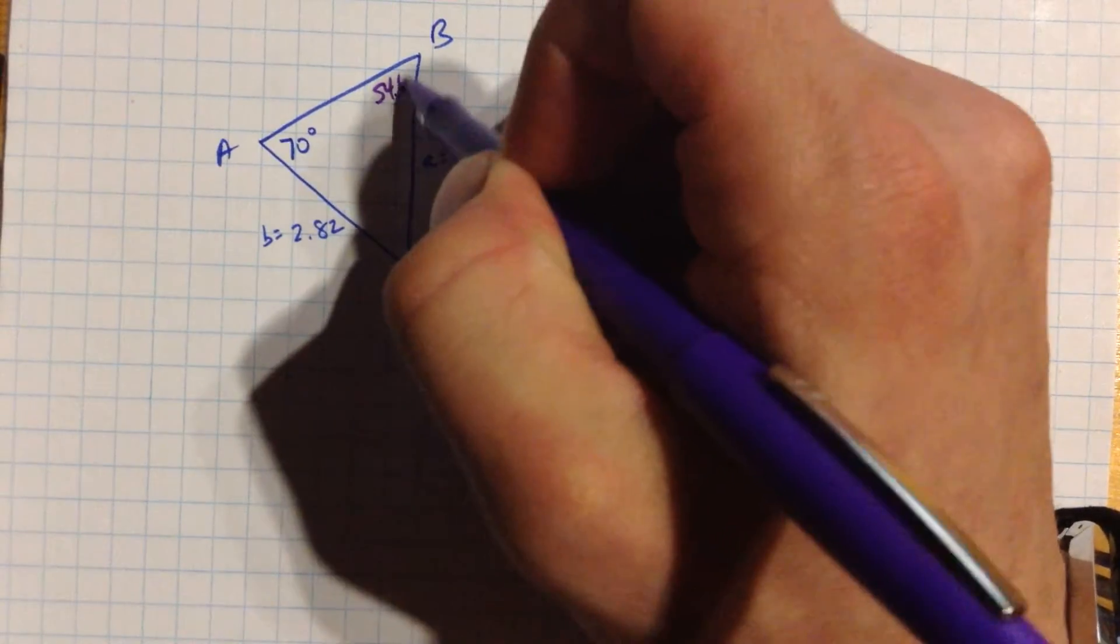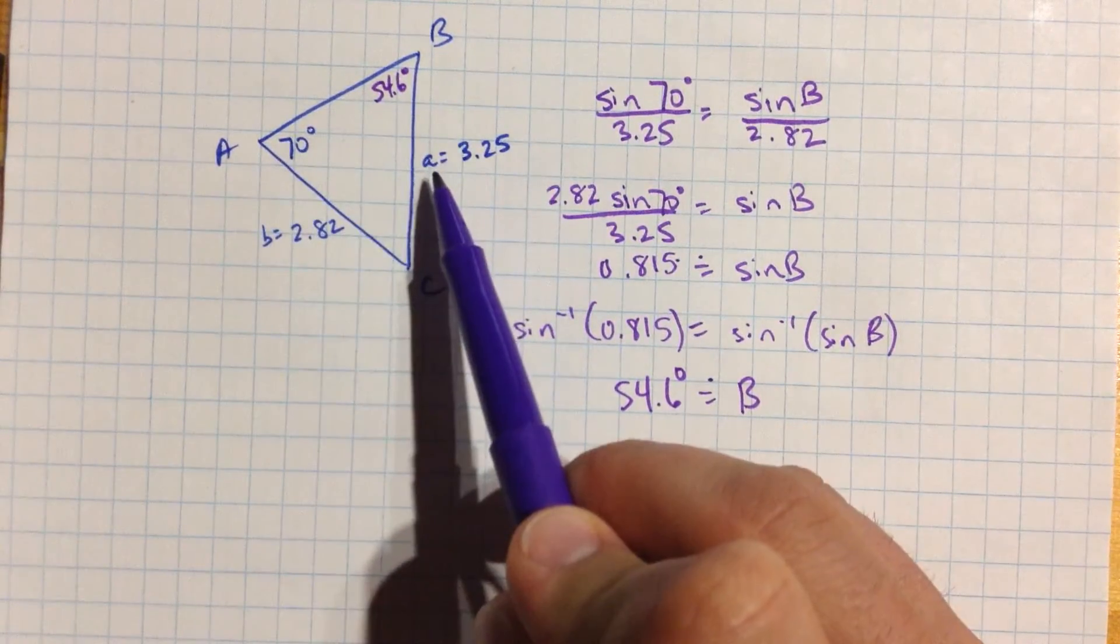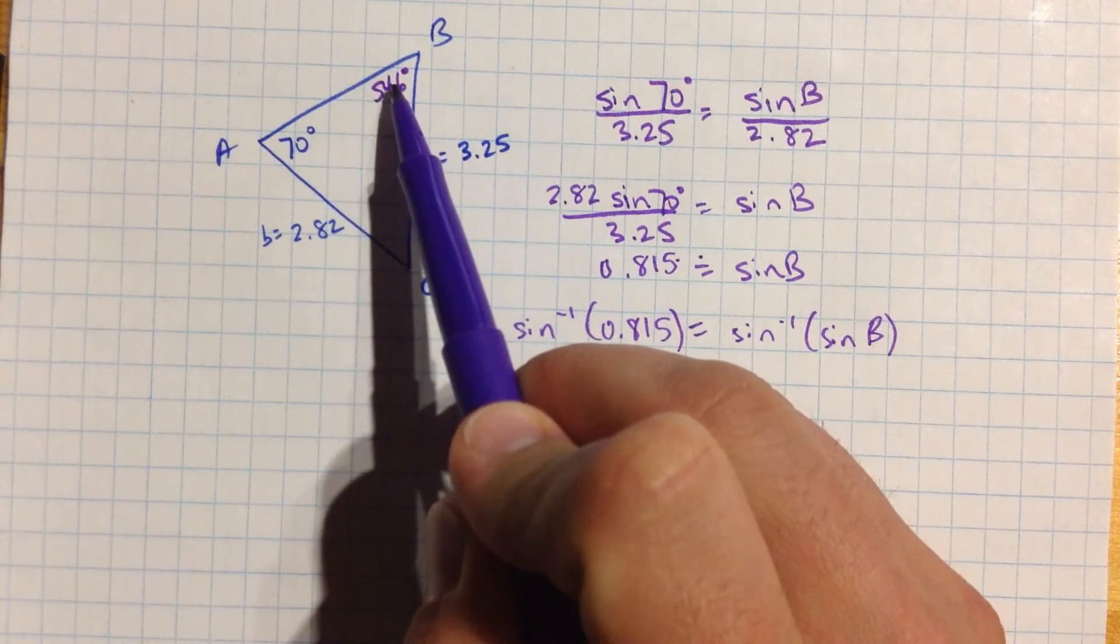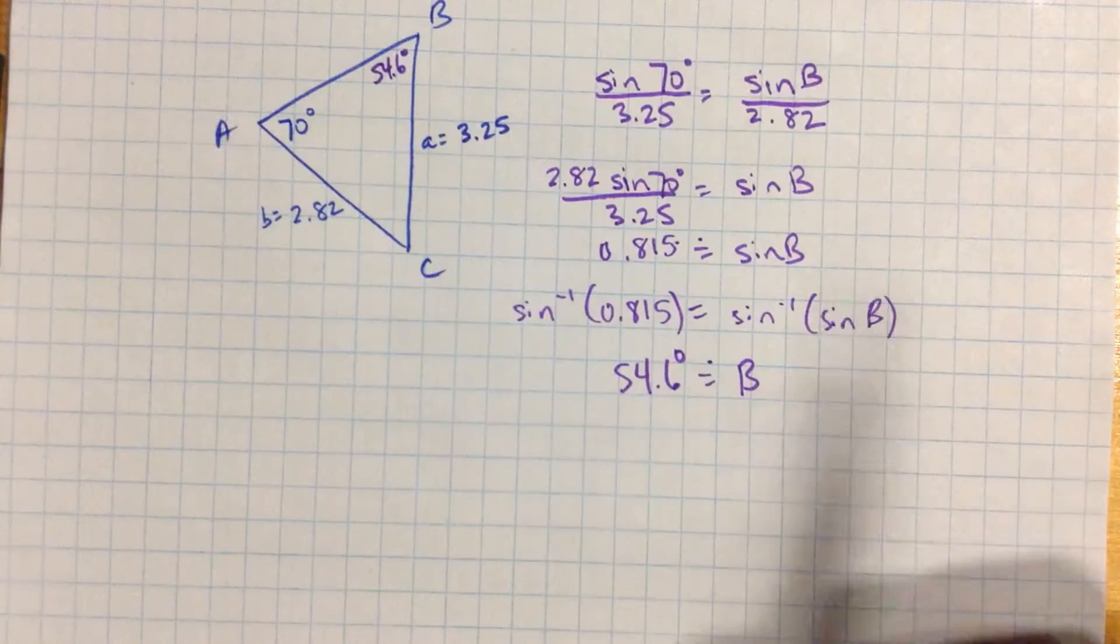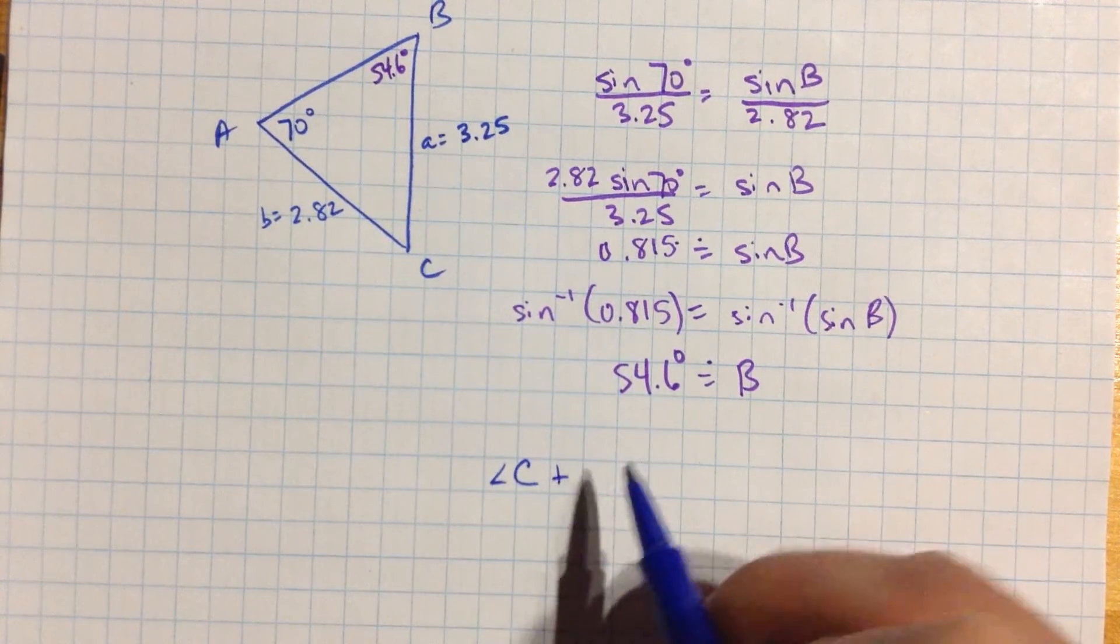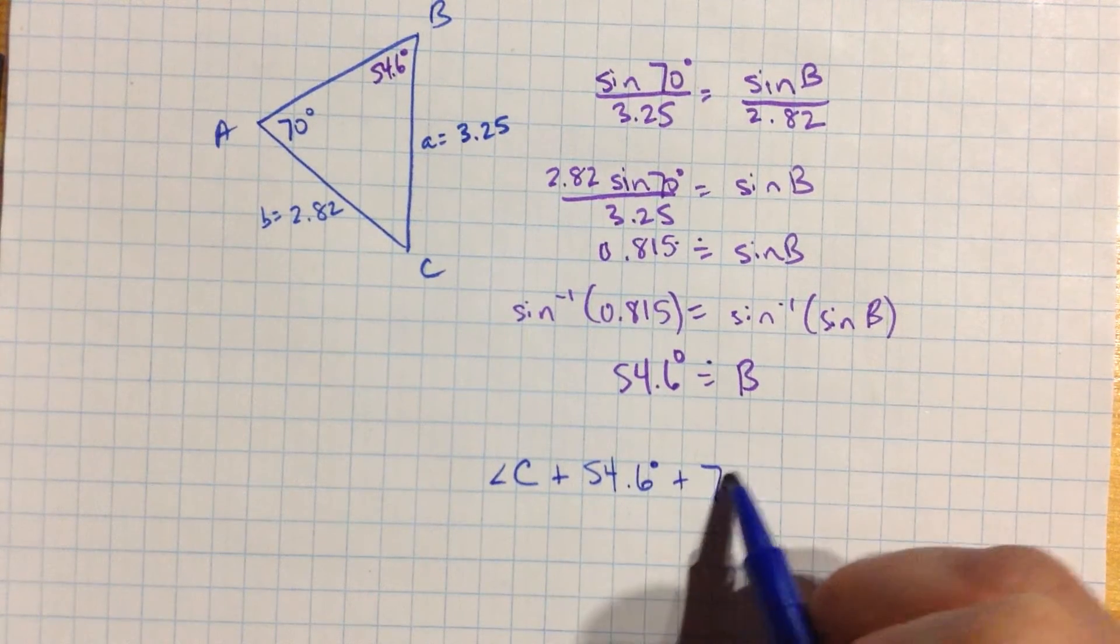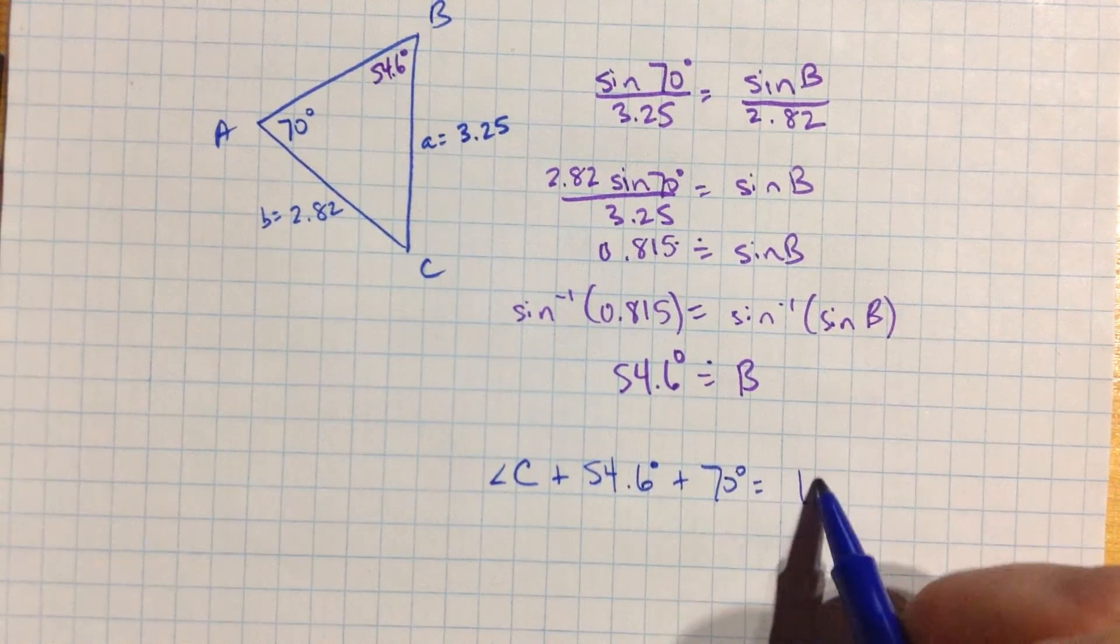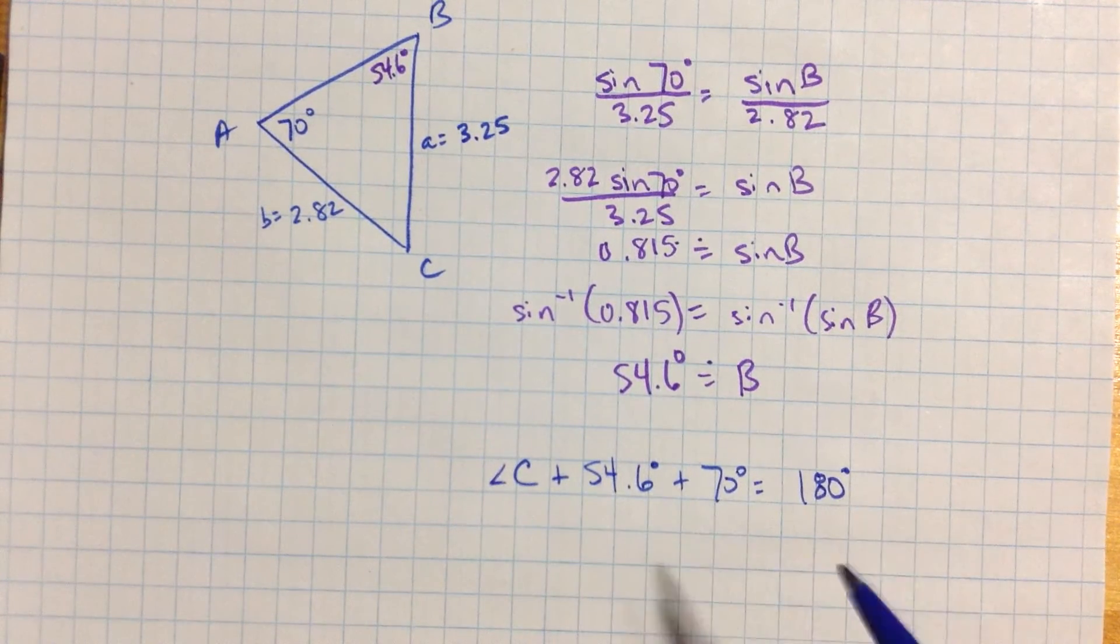What can we do now? Let me write that in there, 54.6 degrees. So we had an angle and two sides, and now we have an extra angle. I can actually figure out what c is now, can't I? Because I know that angle c plus 54.6 degrees plus 70 degrees is equal to 180 degrees, because the three angles in a triangle always add up to 180.